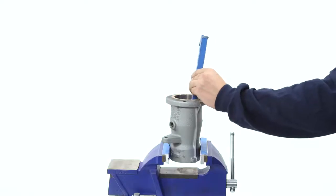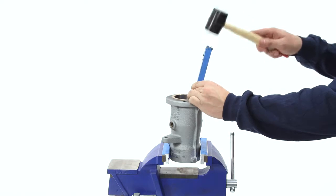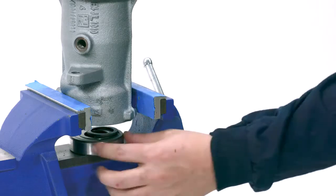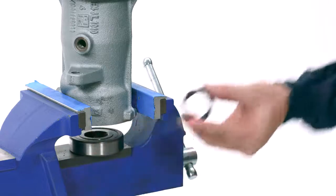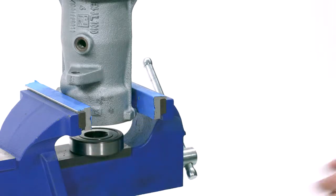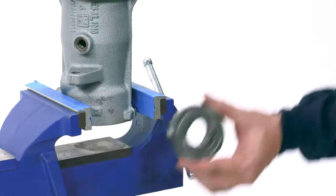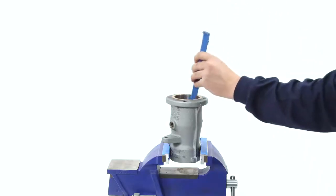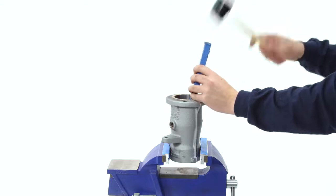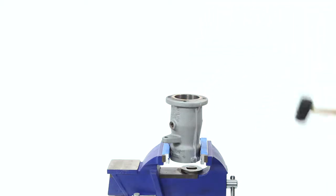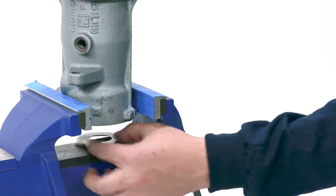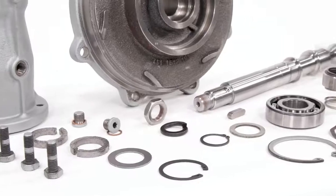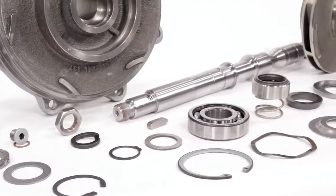With a dowel rod and hammer, carefully tap the bearing out of the bearing housing. Remove the bearing spacer that was behind the bearing in the housing. Gently use a rod and hammer to remove the grease cover. Your Allweiler NTT series pump is now fully disassembled.